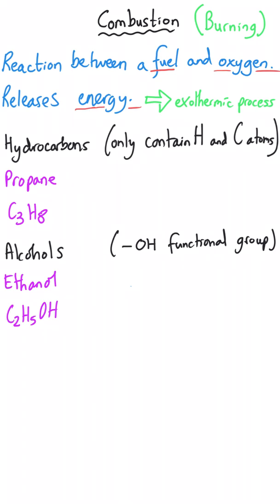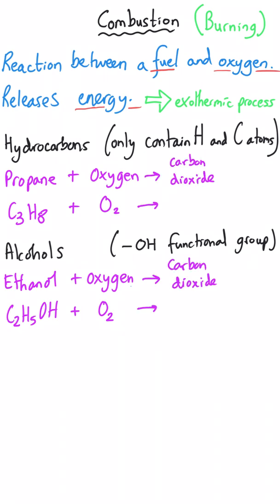When things burn, they always react with oxygen. So in our equations, we need to have the propane reacting with oxygen. Oxygen is diatomic, O2, and ethanol will also be reacting with oxygen. When something burns, all of the elements present in that fuel will oxidise, and so the carbon will turn into carbon dioxide, which is carbon combined with oxygen, and the hydrogen will turn into water, H2O.